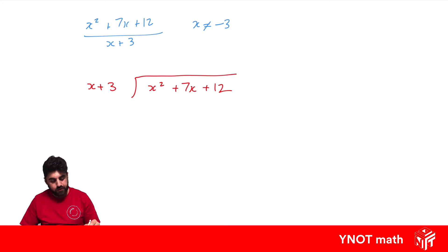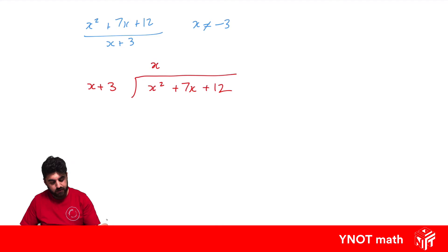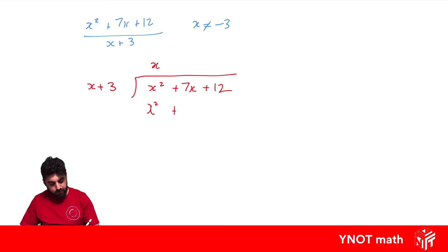We repeat a few steps. We look at the leading term in our divisor and the leading term in our dividend — how many times does the leading term of the divisor go into the leading term of the dividend? That's just x, because x times x gives us x squared. Our next step is to multiply that result by every term in our divisor: x times x gives x squared, and x times positive 3 gives positive 3x.